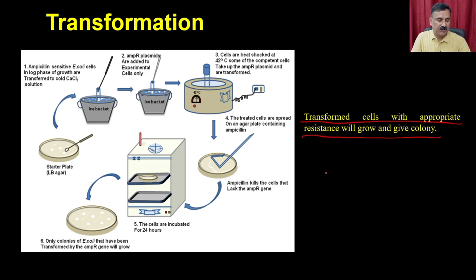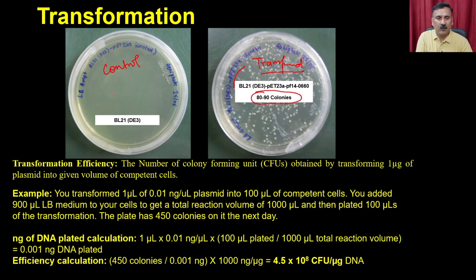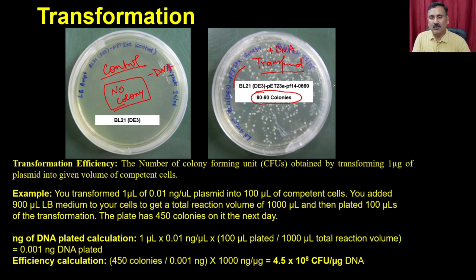After transformation, the bacterial plates are examined: the untransformed control plate shows no colonies, while the transformed plate shows 80 to 90 colonies. Using the number of colonies obtained, you can calculate the transformation efficiency.